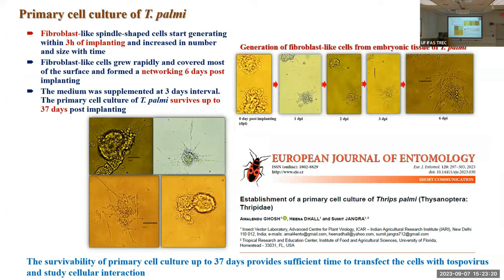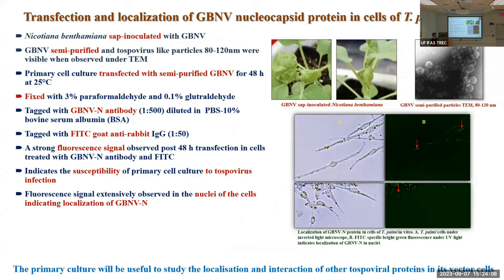We collected eggs at the 70–80% stage and implanted them in media. Fibroblast-like cells started generating three hours after tissue implantation, and networking within the cells was observed six days post-implantation. The cell culture survived for 37 days, providing sufficient time to transfect the virus into the culture. This was very challenging and took us at least three years to reach this stage.